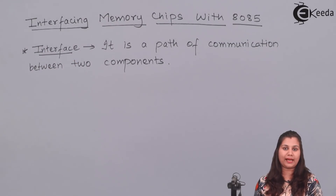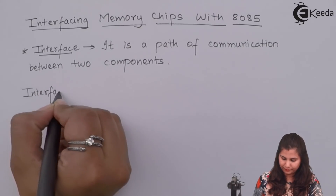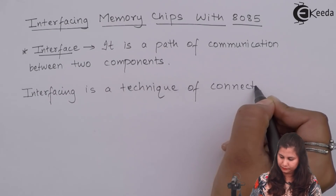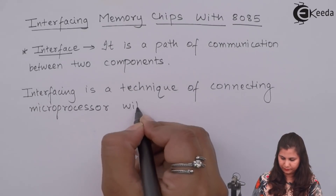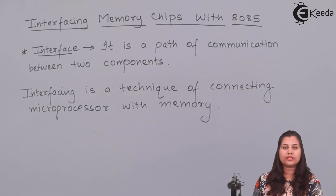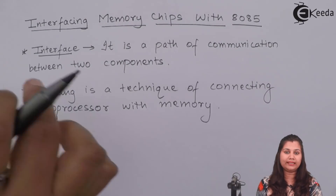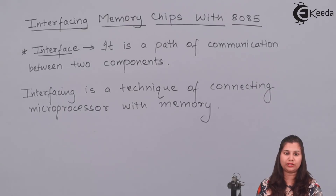Interfacing is a type of technique for communication between the microprocessor and the memory chips. This interfacing technique is used for the communication between the microprocessor and the memory. Through this interfaced circuit, the microprocessor and memory communicate with each other.